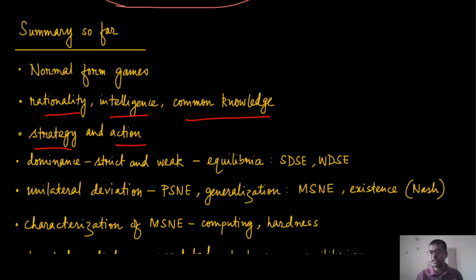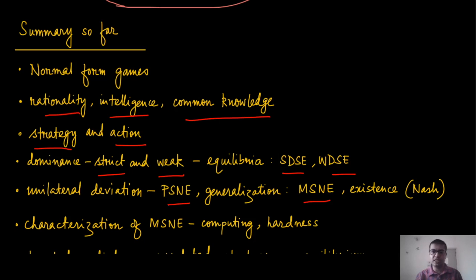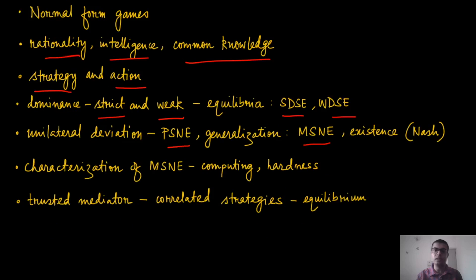We distinguished between what is a strategy and what is an action — this will become more evident when we discuss the next type of games. We discussed various notions: strict and weak dominance, and the corresponding equilibrium notions. We discussed pure strategy Nash equilibrium for when one player immediately deviates, generalized to mixed strategy Nash equilibrium, with existence guaranteed by Nash's theorem. Then we discussed the characterization result for MSNE. The hardness of computing MSNE is an issue, so in this module we relaxed it to a trusted mediator-based approach where strategies are collectively suggested — those are called correlated equilibrium.